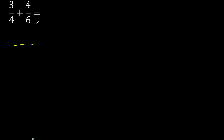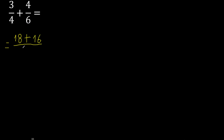First, multiply like this: 6 multiplied by 3 is 18, 4 multiplied by 4 is 16, 4 multiplied by 6 is 24. The result is 34.